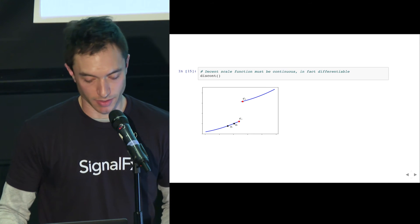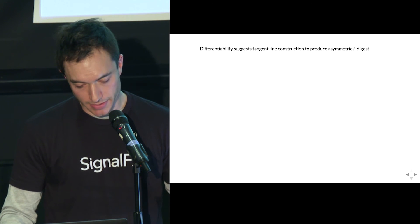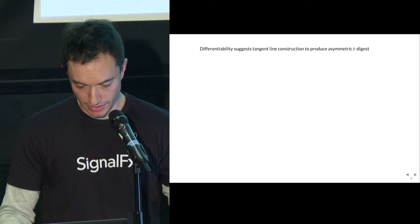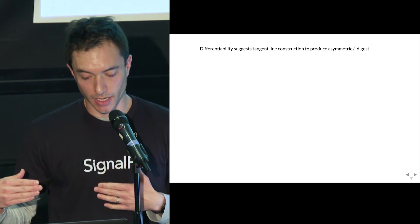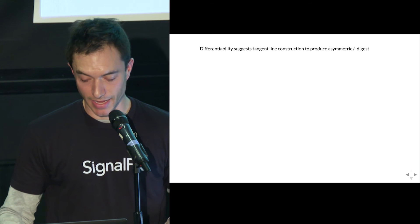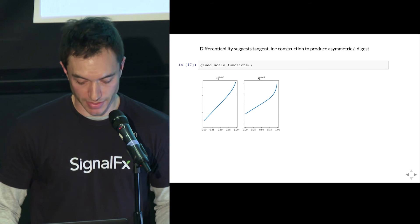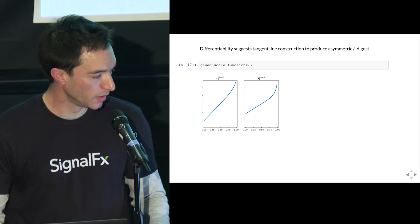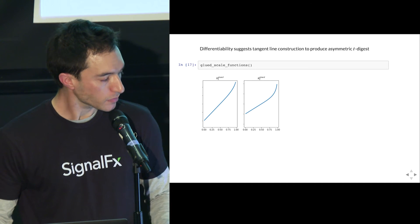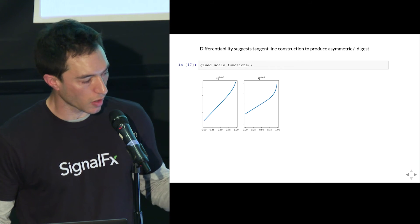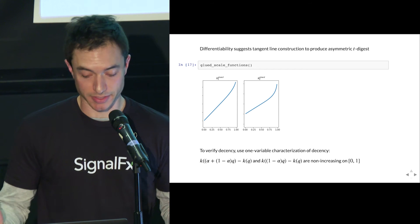This requirement that a decent scale function must be differentiable suggests a construction for asymmetric accuracy. Since we care a lot about one side of the distribution — say, above the 90th percentile for SLA violations — we can pick some point like one-half and instead of using arcsin or log(Q/(1-Q)) across the board, take the tangent line at that point on the left side and extend the function linearly. This gives us scale functions that produce progressively smaller clusters as you move to the right.